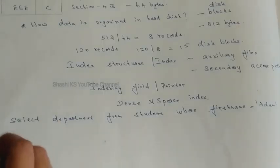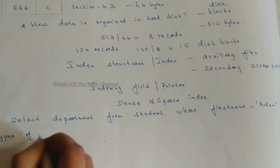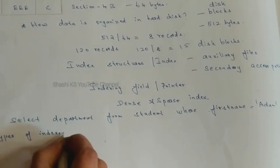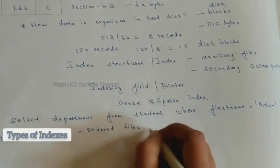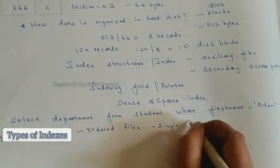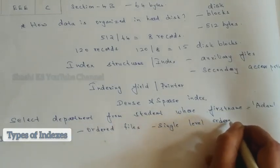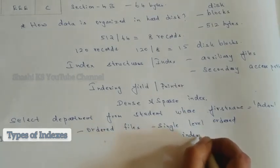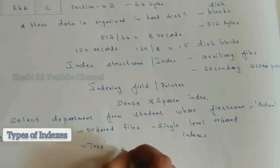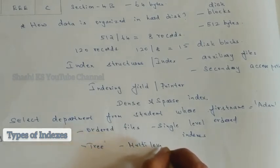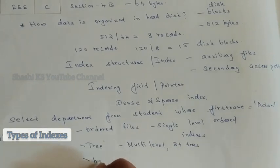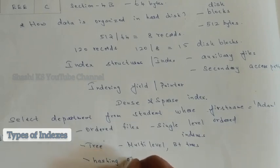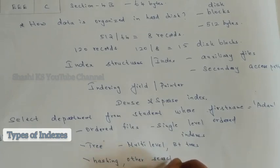There are three main types of indexes. First, indexes based on ordered files, called single-level ordered indexes. Second, indexes based on tree data structures, which include multi-level indexes and B+ trees. Third, indexes based on hashing and other search data structures.